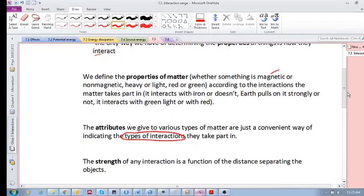Now let's move on to something called the strength of the interaction. Every interaction has a strength and what we need to see is that it is a function of the distance separating the objects.